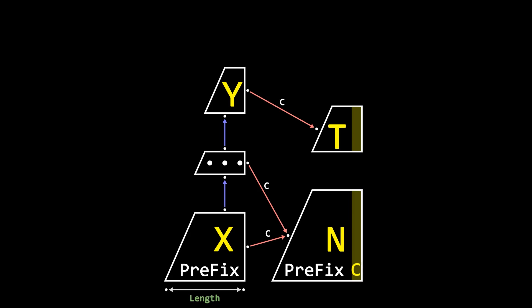So the length of N is the length of X plus 1. Define that Y's length is Y and T's length is T. If T equals Y plus 1, we can let N's link point at T.